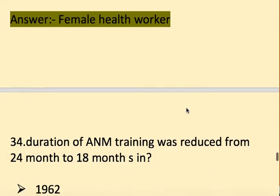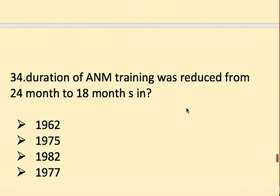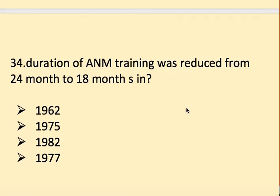The duration of A&M training was reduced from 24 months to 18 months in 1977.